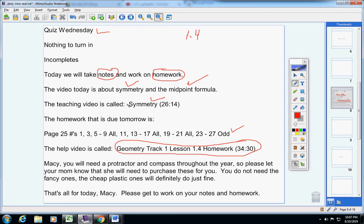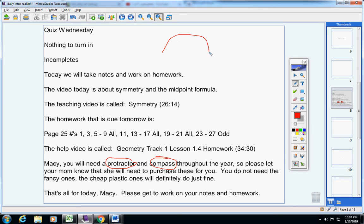Also, Macy, throughout the year, not today, but throughout the year, you're going to need a protractor and a compass. Now a protractor is that semi-circle thing that you use to measure angles. And a compass is that device that has a needle on one end and a pencil on the other end, and you can make circles with it on paper. That's a compass.